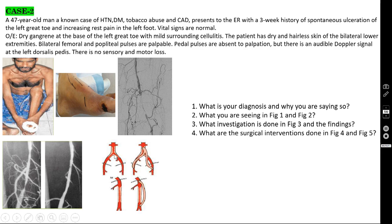Here you are seeing a block in the superficial femoral artery. This is the inguinal ligament, this is the common femoral artery, this is the deep femoral branch, and this is the superficial femoral artery — there is a block. You have to do a bypass surgery — femoropopliteal bypass surgery. If it is above the knee, you can use synthetic material — Dacron or PTFE mesh — or you can use the great saphenous vein. But if you are doing below-knee bypass surgery, you should use only the great saphenous vein; there is no role of synthetic materials like Dacron or PTFE graft.